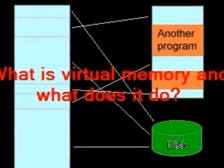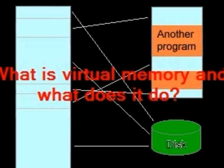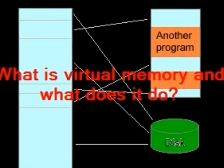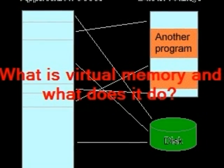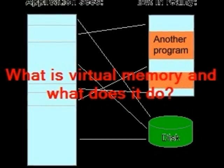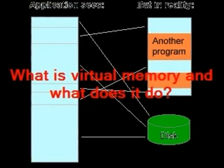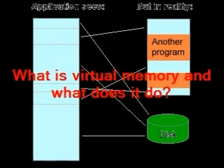Virtual memory is a common part of most operating systems on desktop computers. The virtual memory program thinks it has a large range of contiguous addresses, but in reality the parts it is currently using are scattered around RAM, and the inactive parts are saved in a disk file.